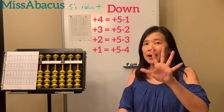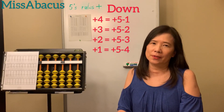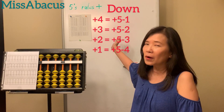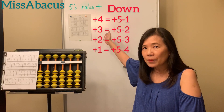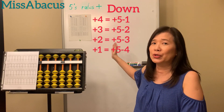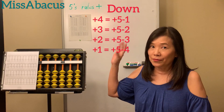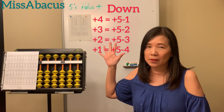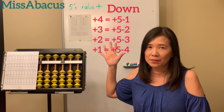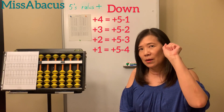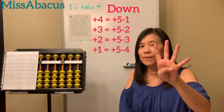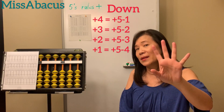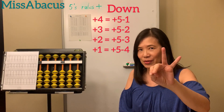Today we are going to learn five rules for the plus part. There are four rules: plus four, plus three, plus two, and plus one. For the five rules you only need to memorize two sets of complementary numbers, which are one and four, two and three — or we can say four and one, three and two.